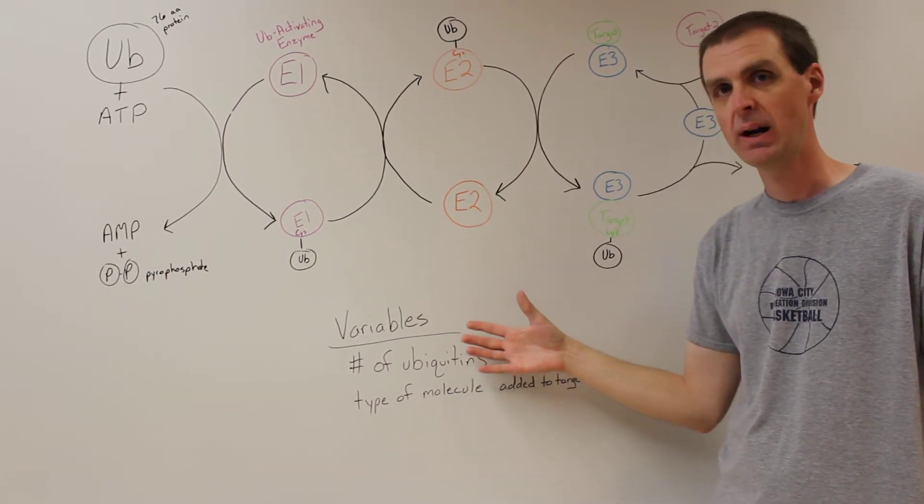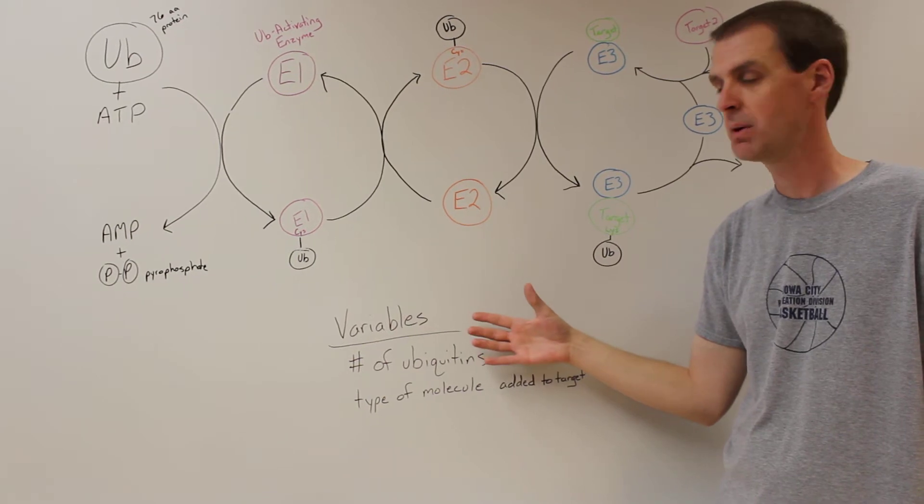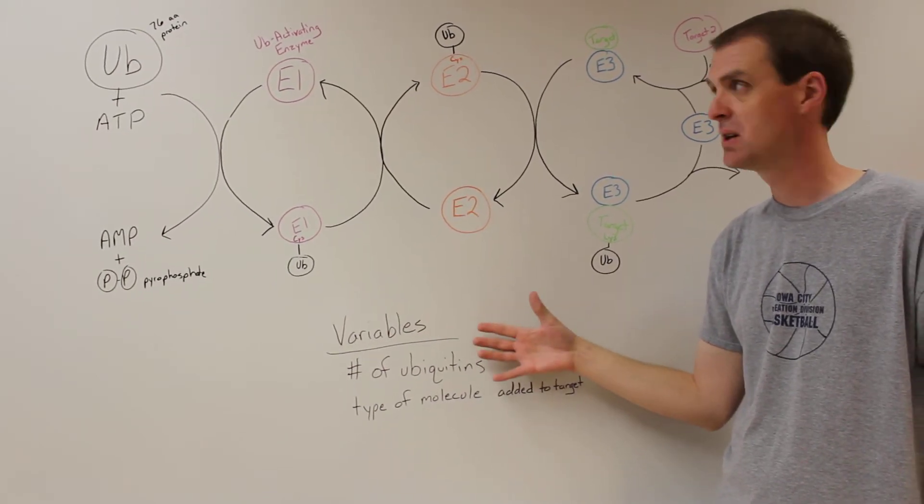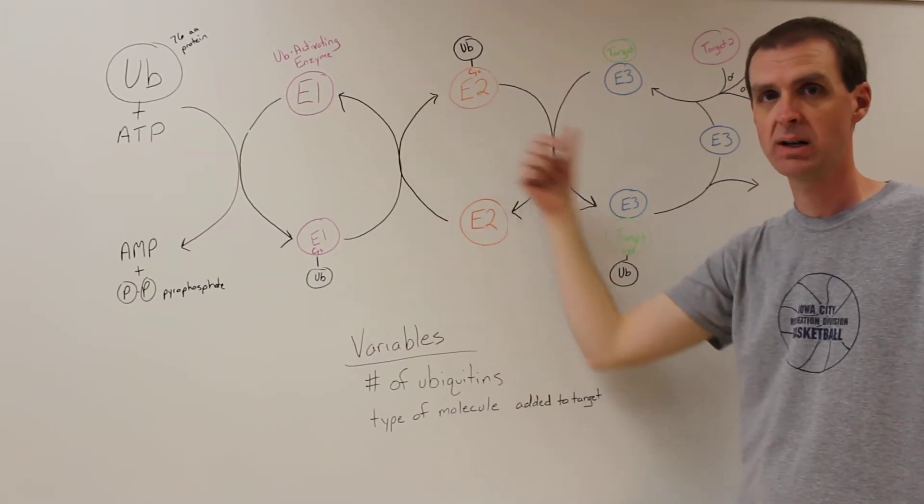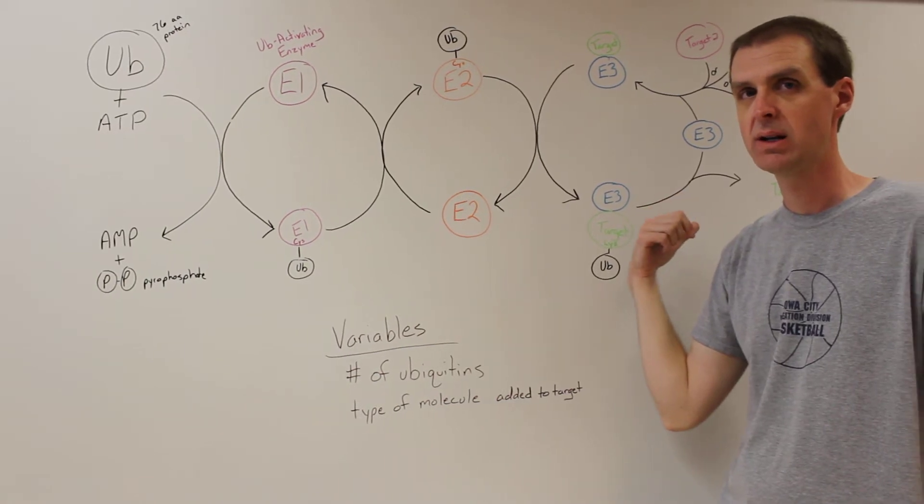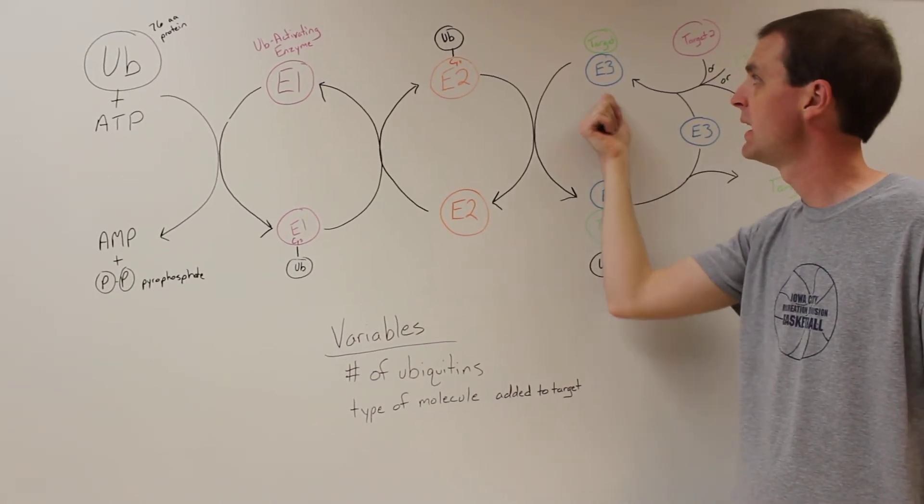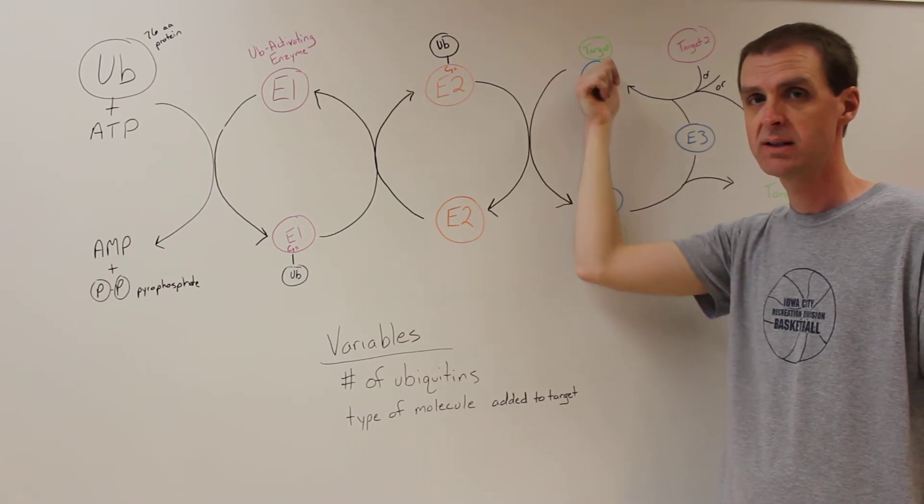It can be proteins called SUMO and if that happens it's called SUMOylation. You could put ISG15 onto other proteins, that would be called ISGylation. When you put ubiquitins on the target it's called ubiquitination.